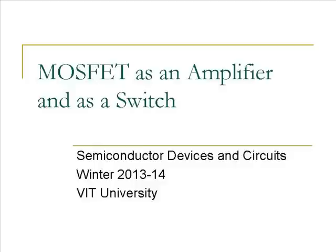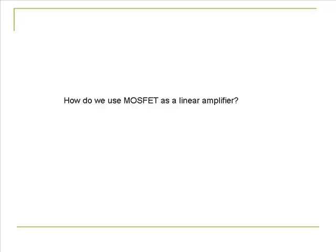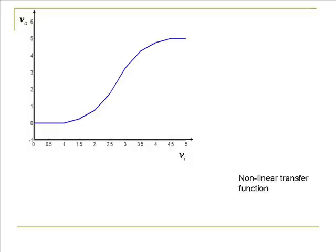In this lecture, we will see how we can use a MOSFET as an amplifier and as a switch. Not only do we want to use a MOSFET as an amplifier, but our amplifier needs to be linear. So how do we use a MOSFET as a linear amplifier? Before we get into that, let's look at a generic device which has a non-linear transfer function and see what the problems are of amplifying signals with such a device.